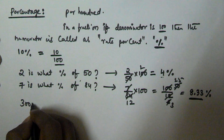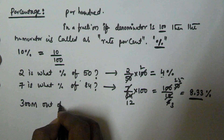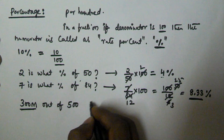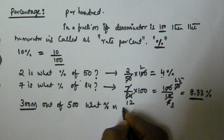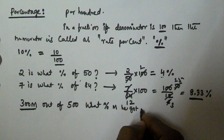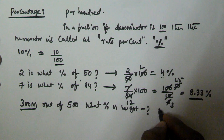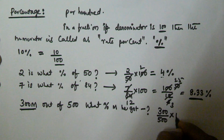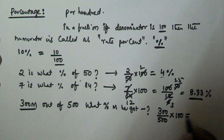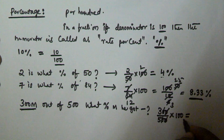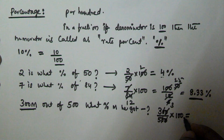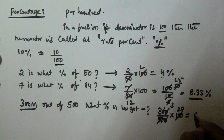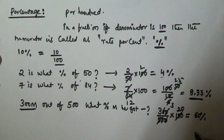Let's see another example. A student got 300 marks out of 500. What percentage of marks did he get? The marks he got divided by the total number of marks, multiplied by 100. So 300 divided by 500 into 100: 3 by 5 into 100, 5 cancels with 20, giving 60 percent. So he got 60 percentage of the marks.